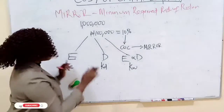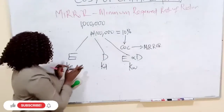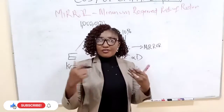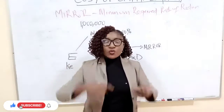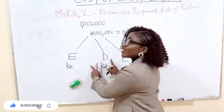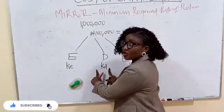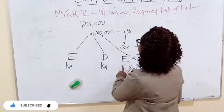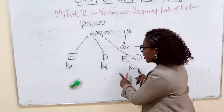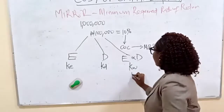A company might be financed by only equity — you can determine the cost of equity, which is the minimum required rate of return on equity. You can be financed by only debt — you can determine the cost of debt. And you can be financed by both, in which case you can determine the weighted average cost of capital (WACC).